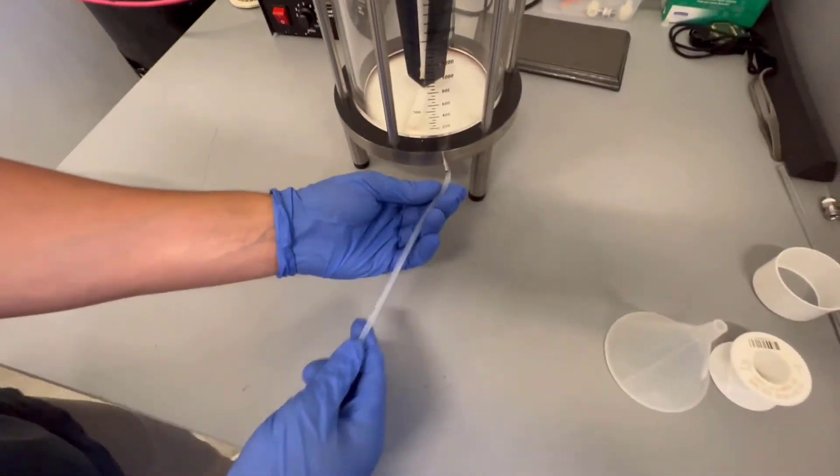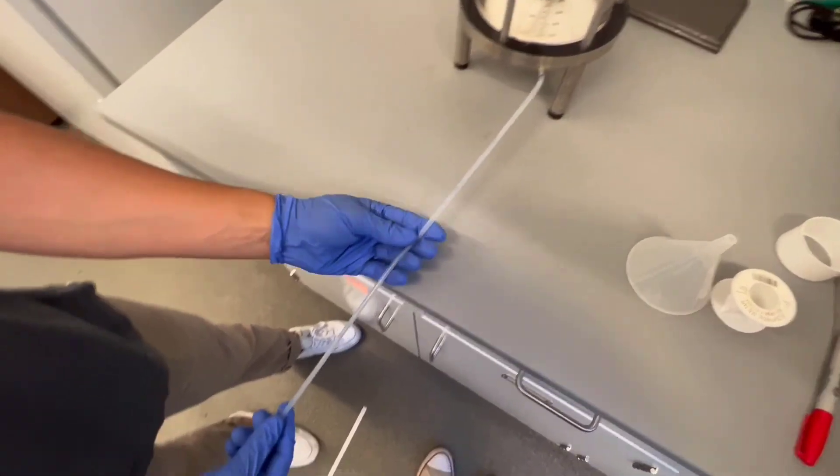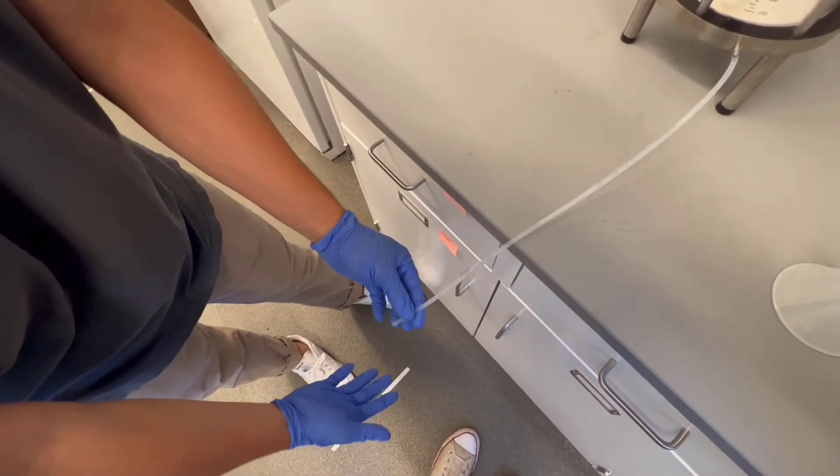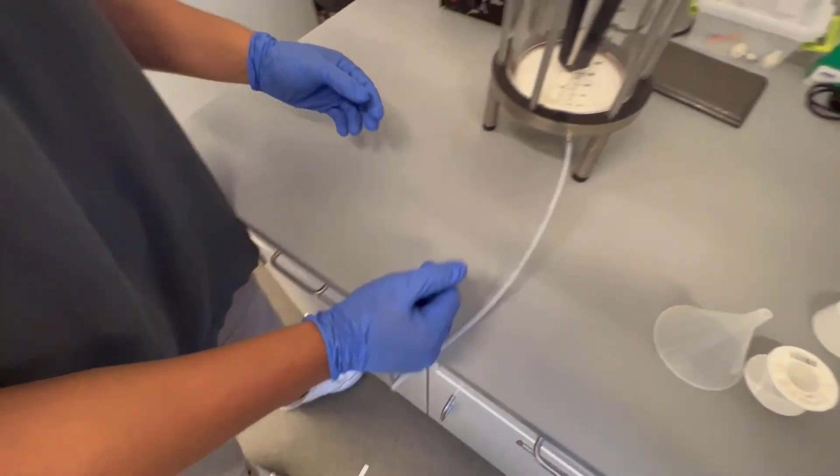And your permeate is going to come out through here, driven by the pressure into a graduated cylinder and scale setup that you have to make your measurements.